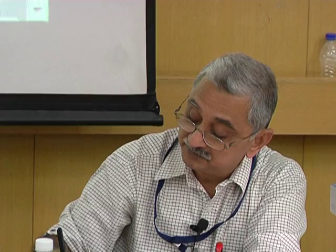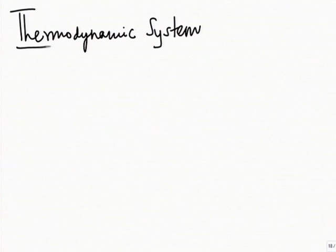There is still some time, so we will look at our first definition: that of a thermodynamic system. Since we are doing a study of thermodynamics, the adjective 'thermodynamic' will be used so often that by default we will soon drop it. Whenever we say 'system,' we will be talking of a thermodynamic system. Whenever we say 'process,' we will be talking of a thermodynamic process.